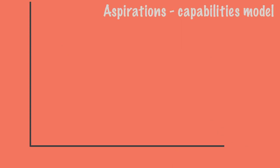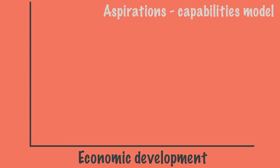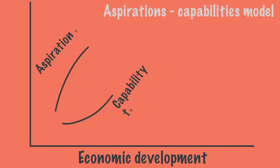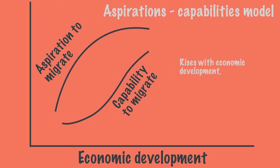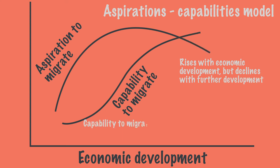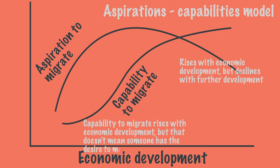The aspiration capabilities model tries to explain the choice to migrate on an individual level. If someone is very poor, they have no desire to migrate, but also no options. The desire to migrate increases through development and, for example, education, through which people learn more about other areas. With higher development, the financial possibilities also increase, so that someone is more likely to migrate.